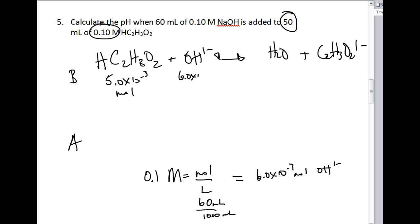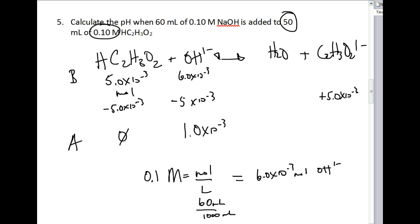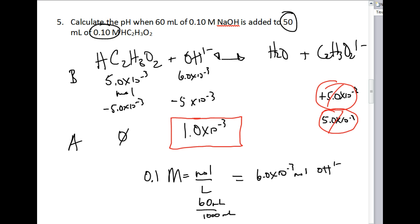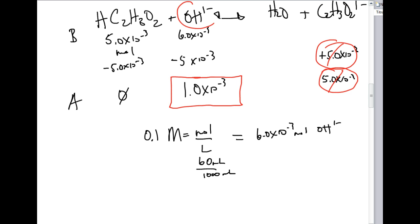We subtract the smaller value — 5.0 × 10⁻³ — from both sides, leaving 1.0 × 10⁻³ moles of excess hydroxide and zero acetic acid. We also produce 5.0 × 10⁻³ moles of acetate ion, but we can ignore it because the predominant species is the excess hydroxide ion, which affects pH far more than the acetate ion. So we calculate pH based on the hydroxide ion concentration.